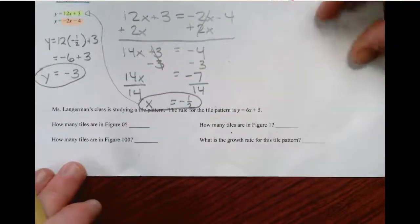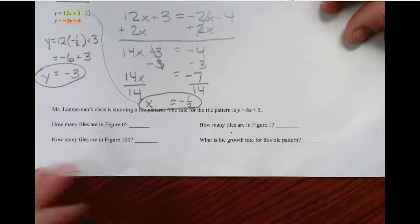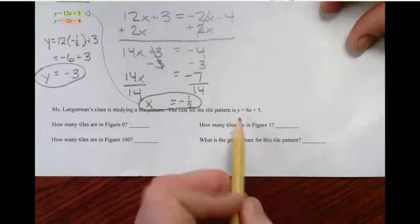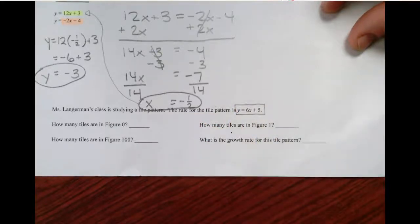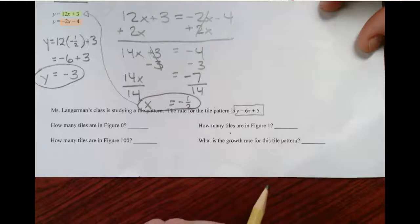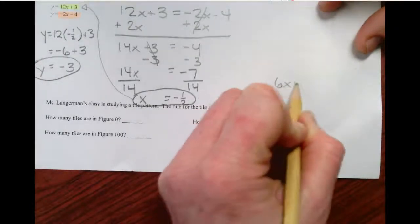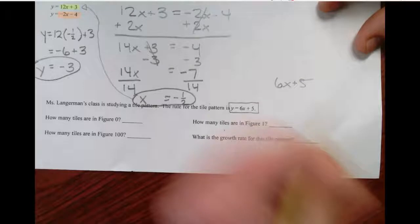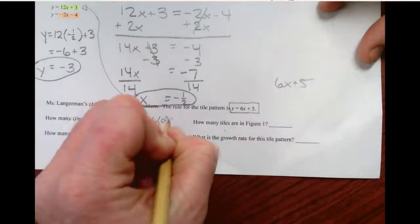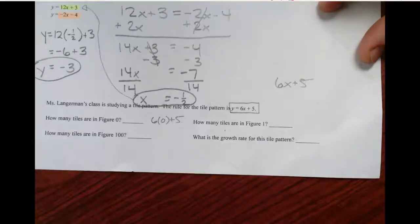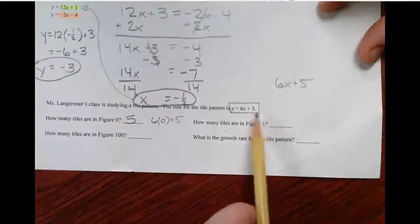Last review question. Ms. Langerman's class is studying a tile pattern. The rule for the tile pattern is 6x plus 5. How many tiles are in figure 0? Okay. So if I have 6x plus 5, if I plug 0 in, 6 times 0 plus 5 is just 5. All right. That's my beginning amount.